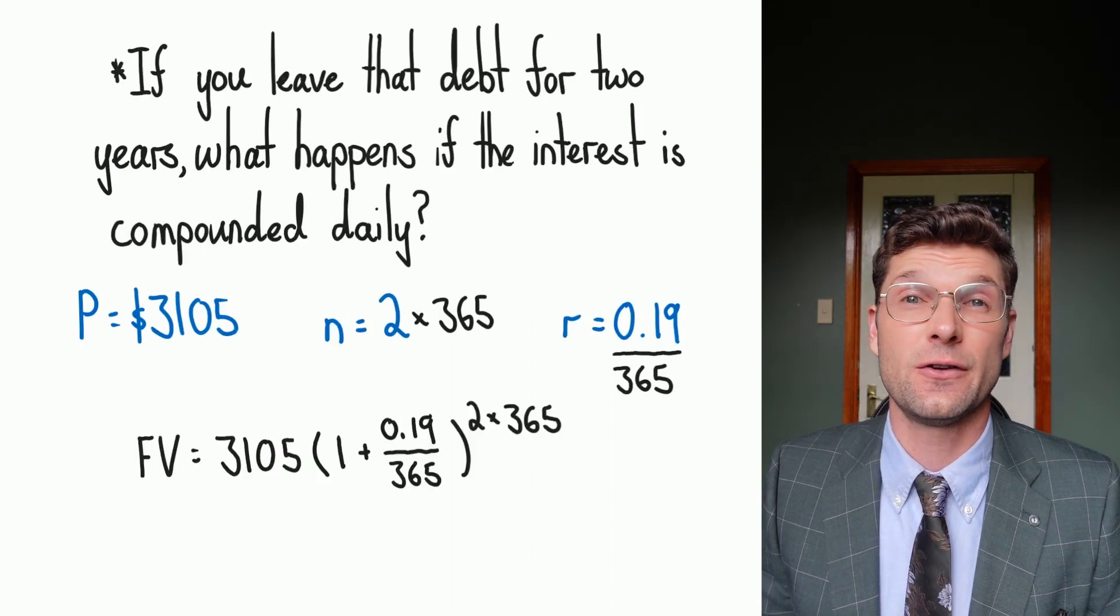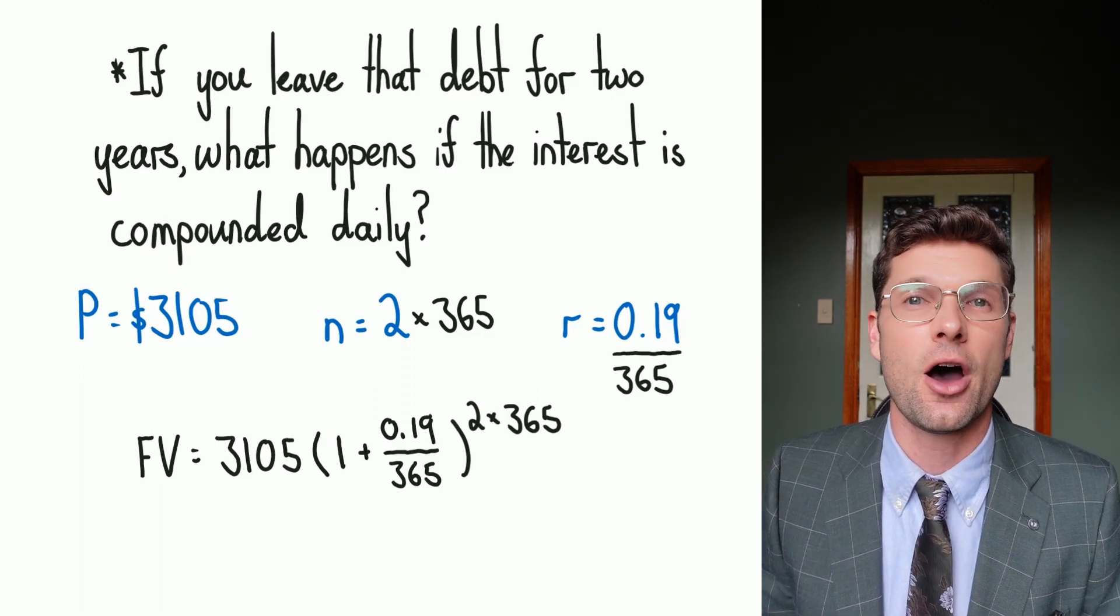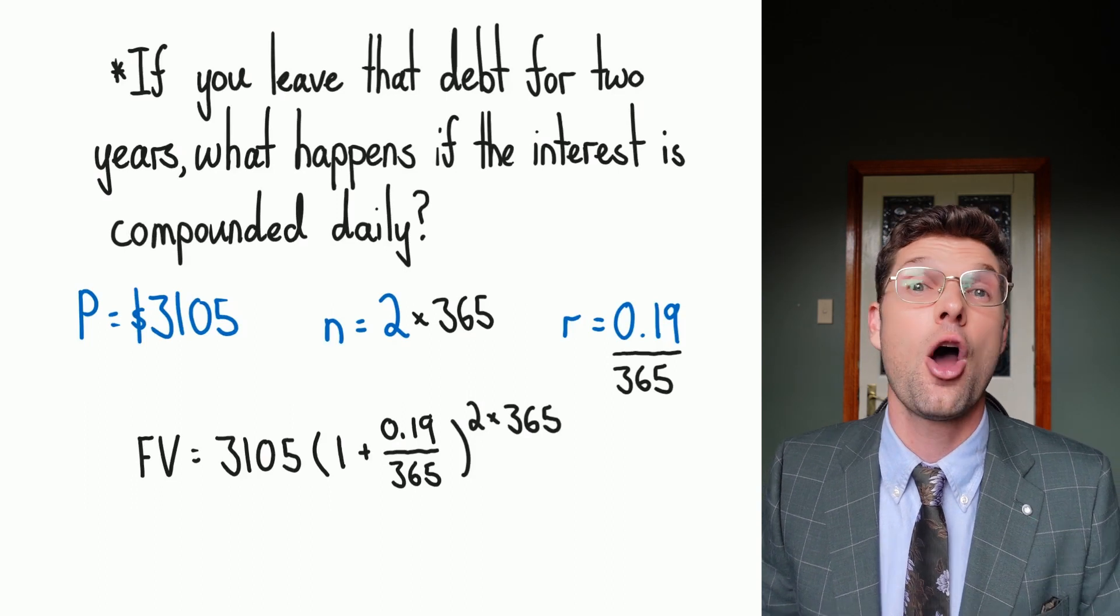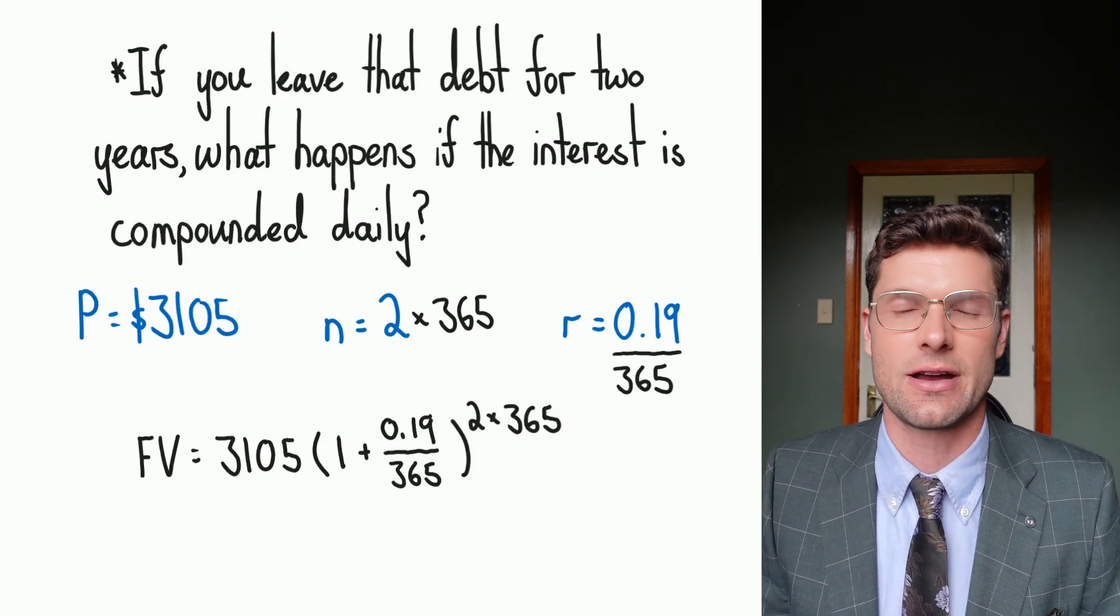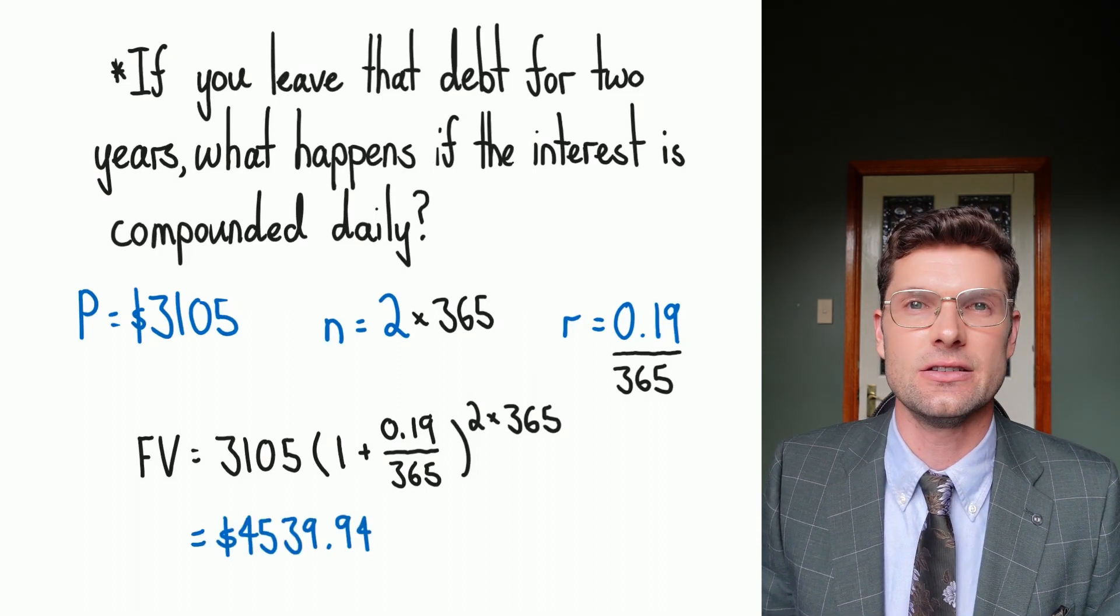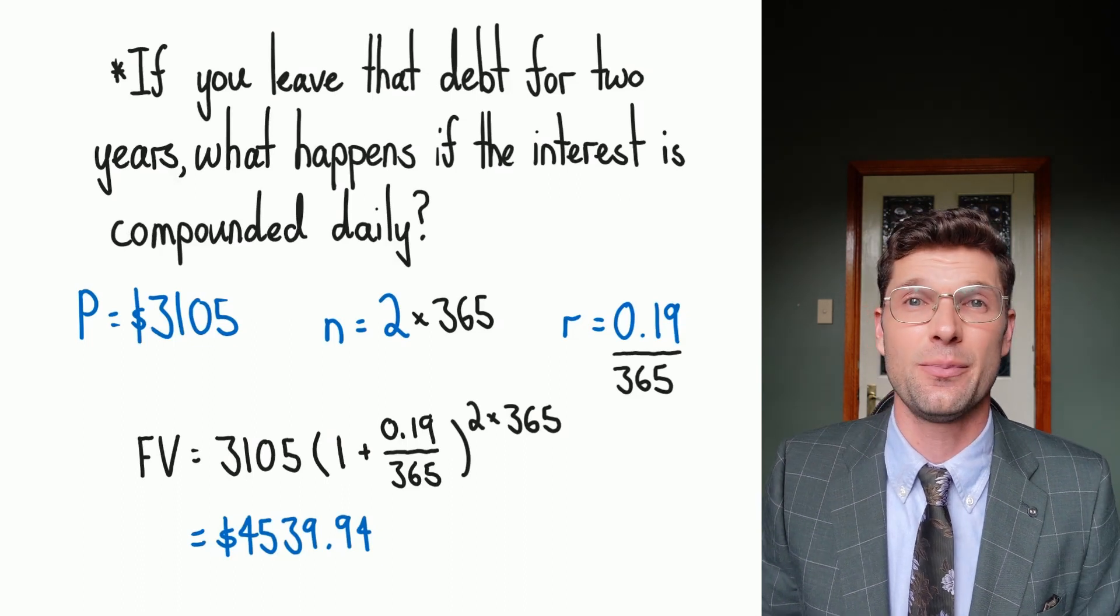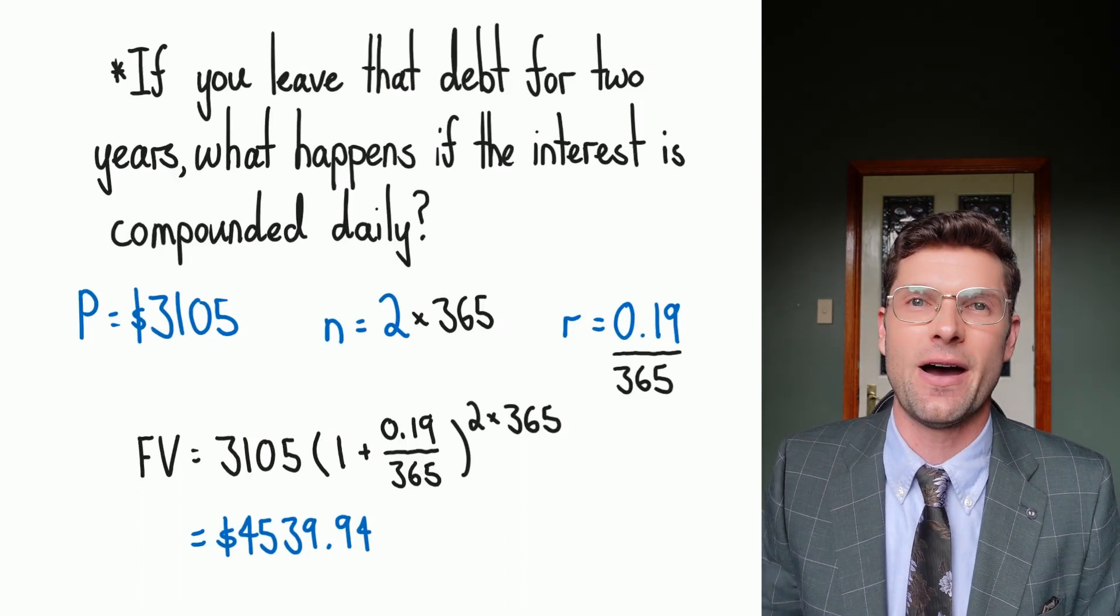All I've got to do is the future value is equal to 3105 bracket 1 plus 0.19 over 365 all to the power of 2 times 365. So the answer for this is $4,539. So this means you've paid $1,400 in interest just to the credit card company for the privilege to borrow that money. So it does seem like a little bit of a waste.